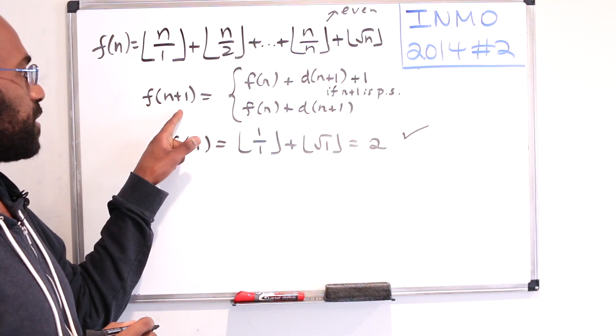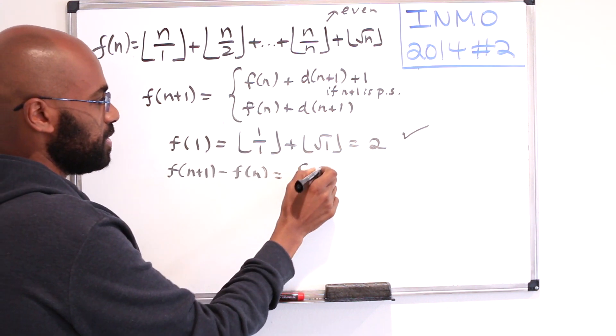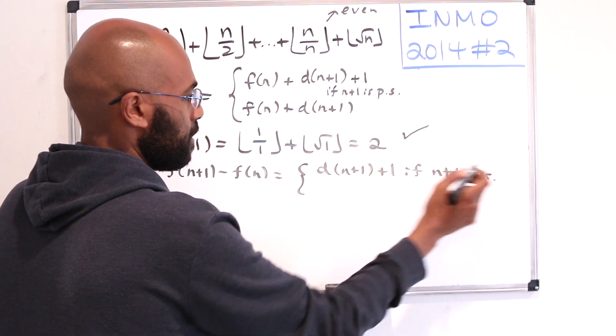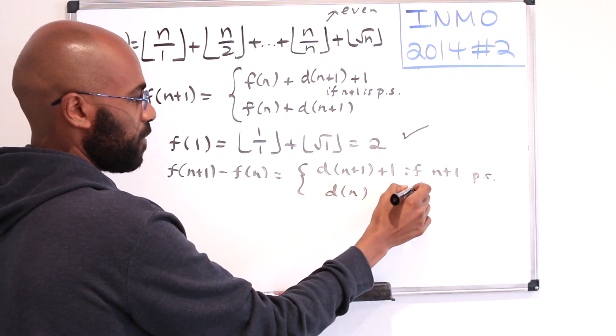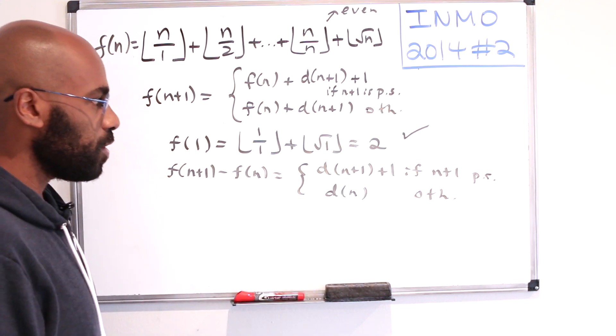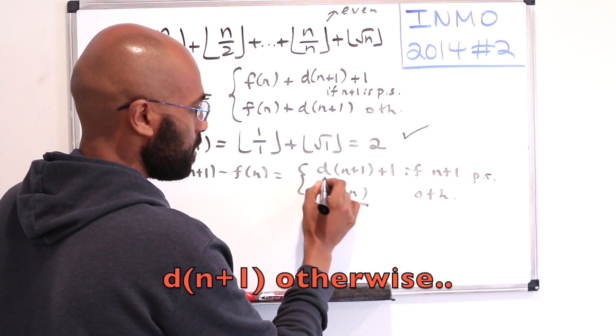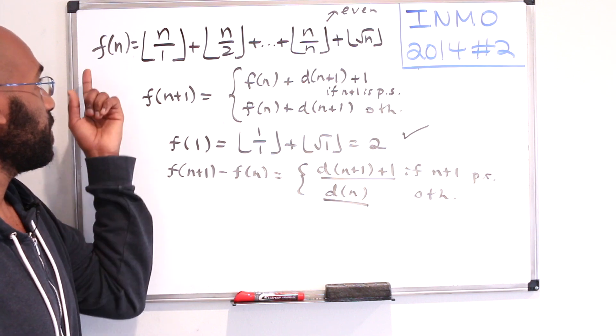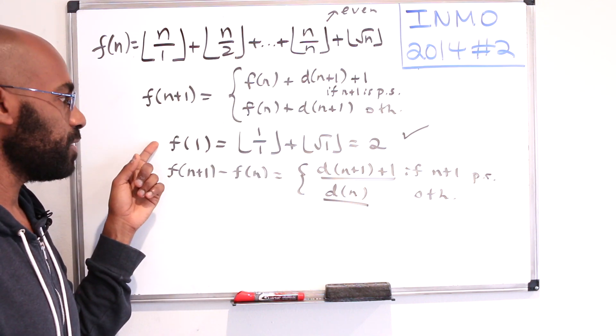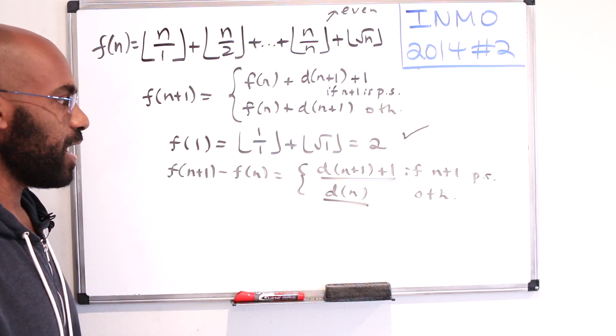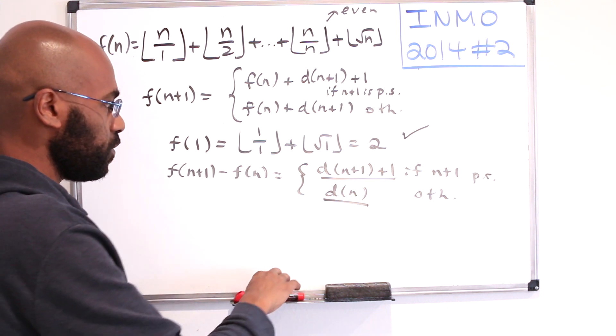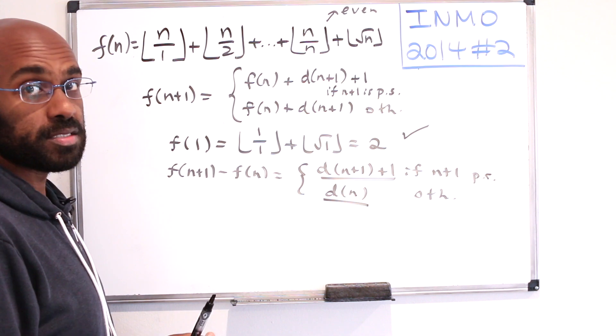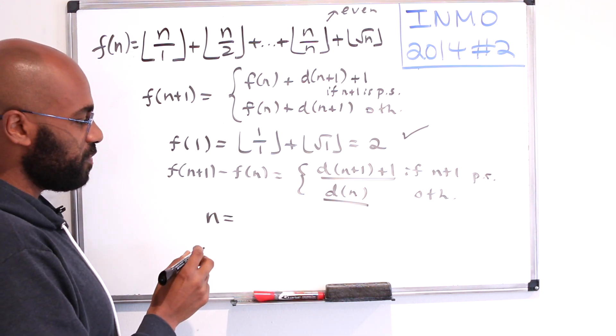Now we notice that f(n+1) minus f(n) is d(n+1) plus 1 if n+1 is a perfect square and it's d(n+1) otherwise. So if we can prove that these quantities are always even numbers, then the difference of any two consecutive expressions like this is going to be even, and since f(1) is even that forces inductively all of the f(n)'s to be even. All right so let's investigate why this expression has to be even regardless of what n is.